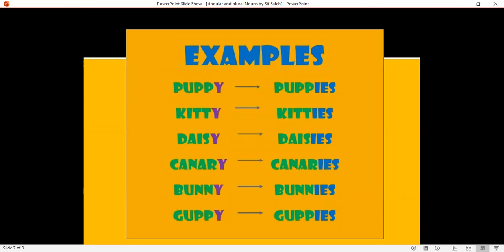Examples: poppy, puppies; kitty, kitties; daisy, daisies; canary, canaries; bunny, bunnies; cubby, cubbies.